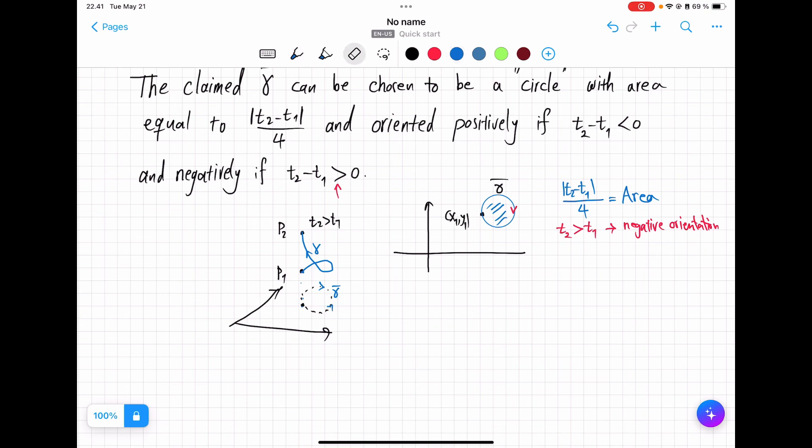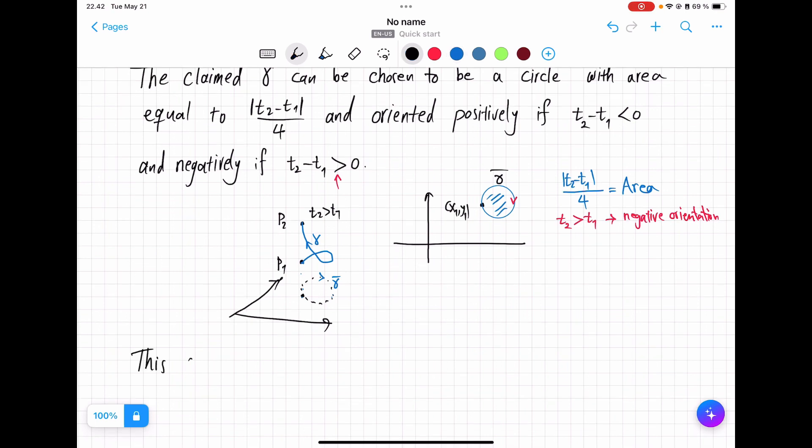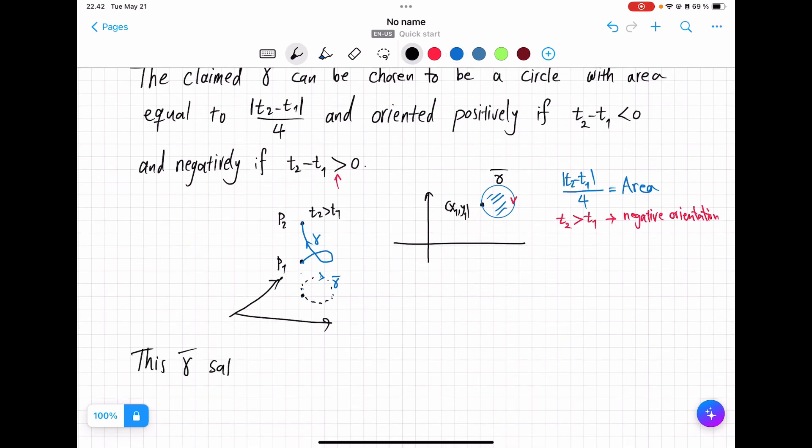the curve you get is extremely different. It goes downward instead of ascending upward. So this gamma prime satisfies all the four conditions that we want.